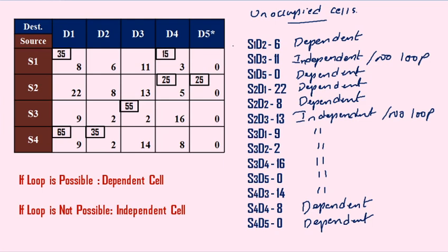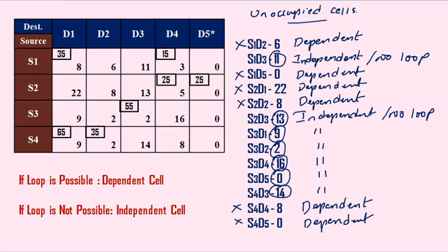Out of all the loops checked, we forget about the dependent cells — striking them down. There are six dependent cells. We need to concentrate only on the independent cells. The independent cells are: S1D3 (cost 11), S2D3 (cost 13), S3D1 (cost 9), S3D2, S3D4 (cost 16), S3D5 (cost 0), S4D3 (cost 14) — seven unoccupied independent cells in total. Out of these, identify the lowest cost member — 0 is the lowest, which is located at S3, D5.